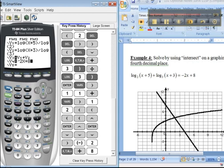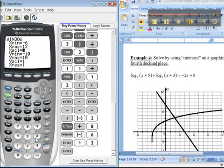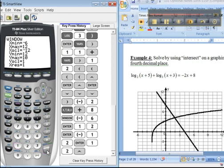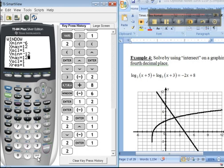I'm going to make the window like they've got it. Negative 6, enter to 12. And then negative 12, it looks like. Enter to 12. Scale, 1. And then negative 12 to 12. And then we graph.